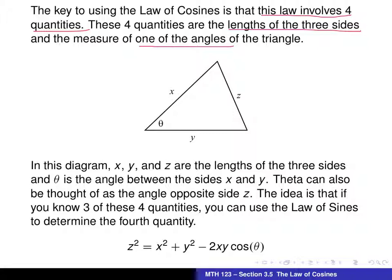And what I like to focus on with this is, again, theta and z. Z is the side opposite the angle theta. And so what we get here is that means theta is the angle between x and y. So if you notice, the z and the theta are on opposite sides of the equation. But on the right side, then, we use the lengths of the sides represented by x and y. And so what we see here is that we get z squared equals x squared plus y squared minus 2xy. And these x and y are the sides that form the angle theta. And again, the idea is if we know three of these four quantities, we can use the law of cosines to determine the value of the fourth quantity.